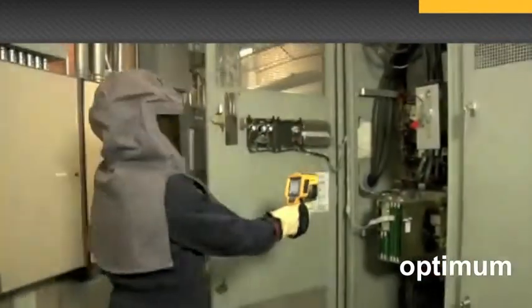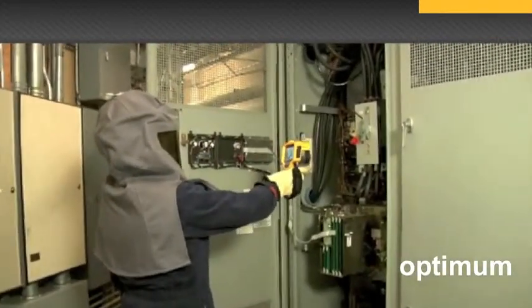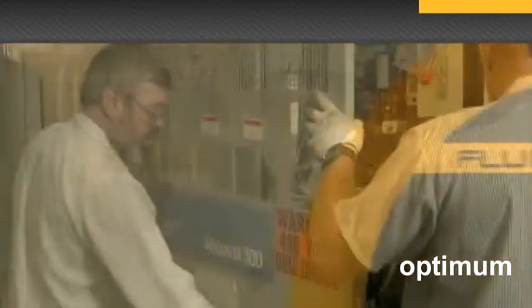You already own a thermal imager, which means you're a believer in regular preventative maintenance for the productivity of your plant and the safety of your employees. Now's the time to take the next step and install unsurpassed Fluke IR windows with clear view optic materials in your high voltage areas. There's simply no reason to put your equipment or your employees at risk.